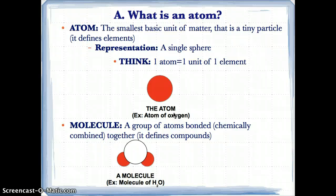On the other hand, a molecule is a group of atoms bonded or chemically combined together, and it defines compounds. Two or more elements chemically combined is a compound, so two or more atoms chemically combined is a molecule. Think: atom relates to element, and molecule relates to a compound.